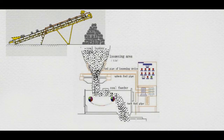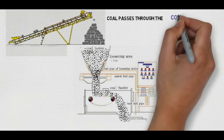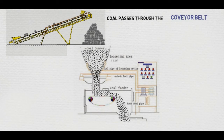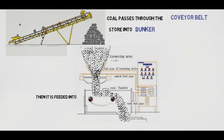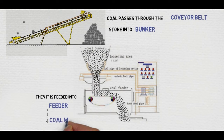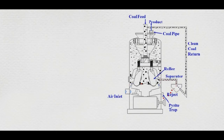Now let's have a look at this section. Here, coal is passing through the conveyor belt and then it is stored into the bunker. It is then fed into the feeder, and from the feeder the coal enters into the coal mill.